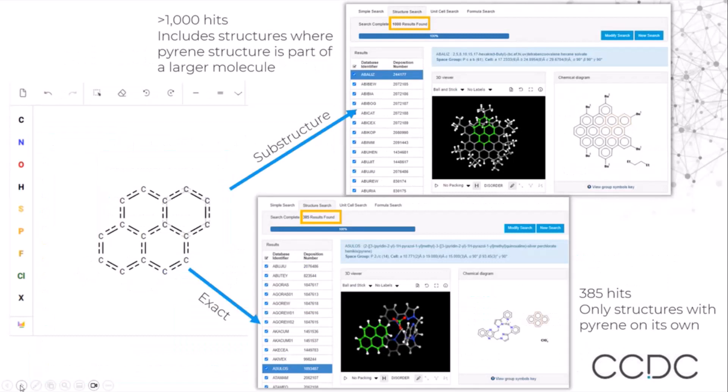To see these in examples, we drew a pyrene substructure. If we run a substructure search, this will return structures where the pyrene structure is part of a larger molecule. If we run an exact search instead, this will return hits with only structures with pyrene on its own.